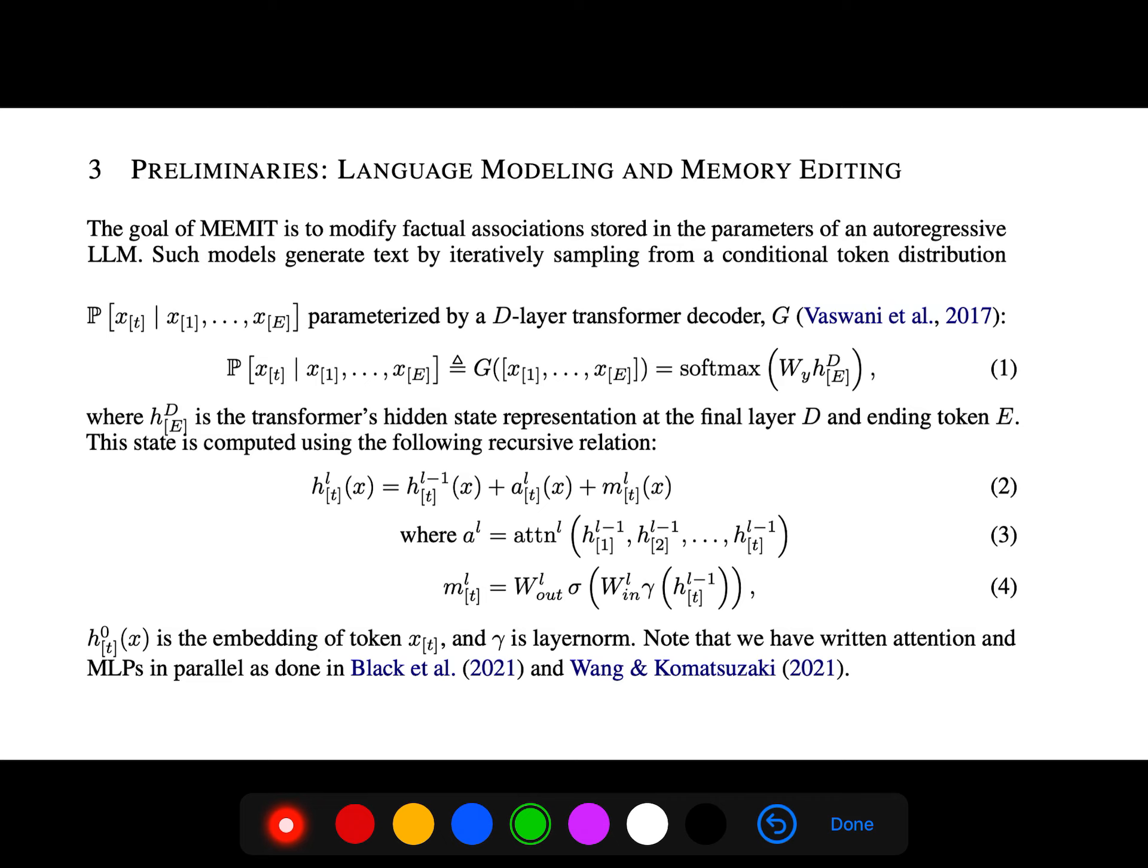The goal is to modify factual associations stored in the parameters of an autoregressive LLM. Such models generate text by iteratively sampling from a conditional token distribution. It's a d-layer transformer decoder. The state is computed using this following recursive relation.